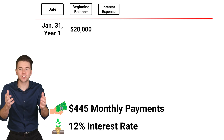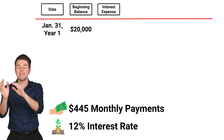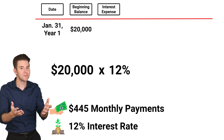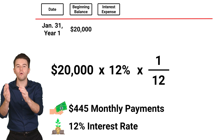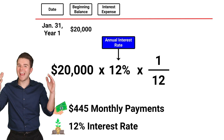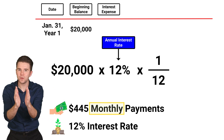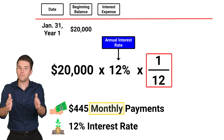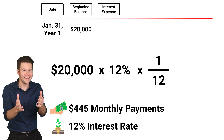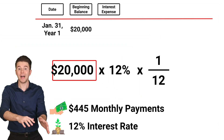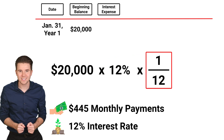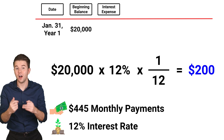The next column is interest expense, which is computed as the beginning balance multiplied by the interest rate of 12% and multiplied by 1 over 12 months. We do this as the interest rate on the note is annual and we need a monthly rate, hence the 1 over 12 months. So for January 31st of year 1, $20,000 is multiplied by 12%, which is then multiplied by 1 over 12 months to get $200 of interest expense.